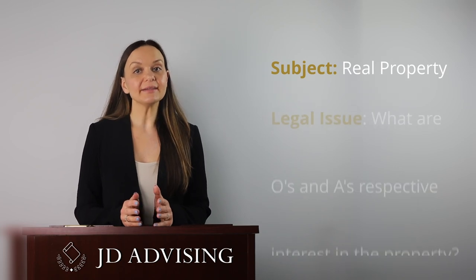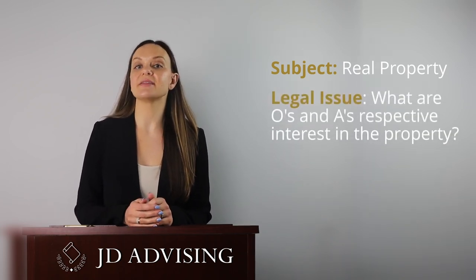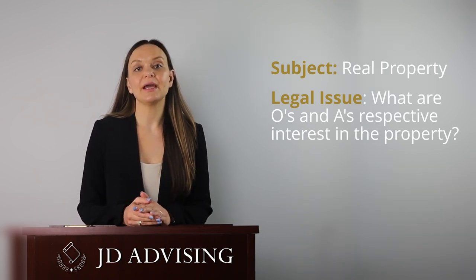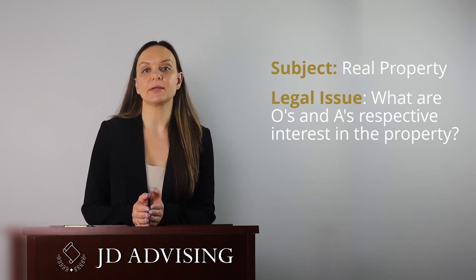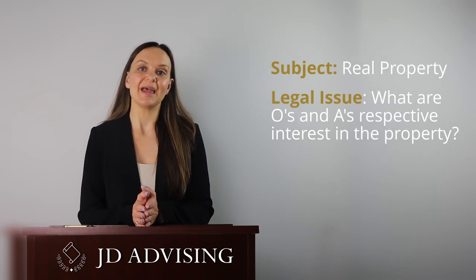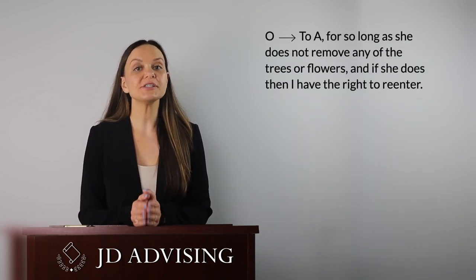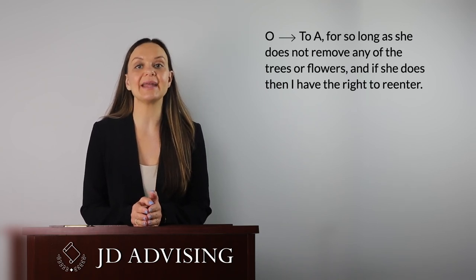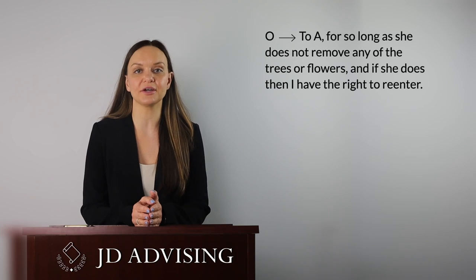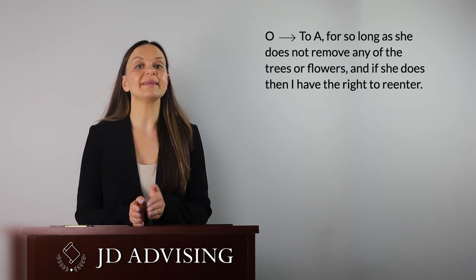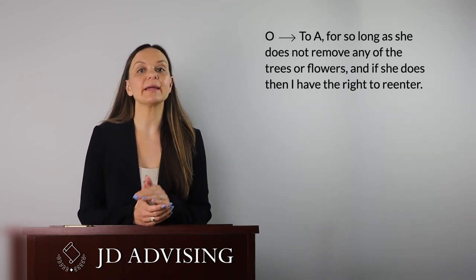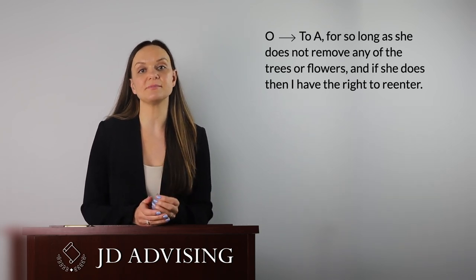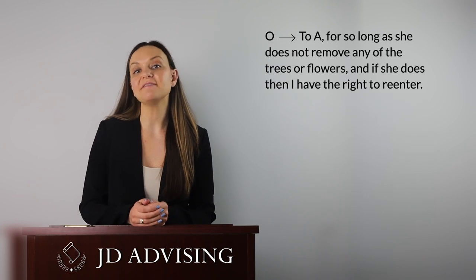The subject being tested in this question is real property, and the legal issue is what are O's and A's respective interests in the property. To determine their interests, we need to focus on the precise language in the grant. Going back to the fact pattern, the facts state: 'To A, for so long as she does not remove any of the trees or flowers, and if she does, then I have the right to re-enter.' Focusing on this language, we can see that we have a conflict, because the language used is that of both a fee simple subject to a condition subsequent and a fee simple determinable.